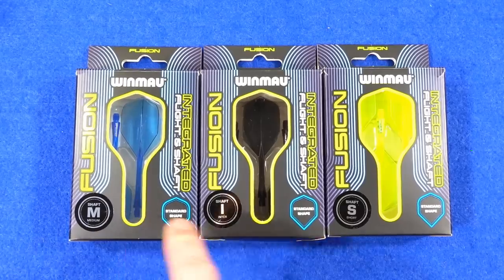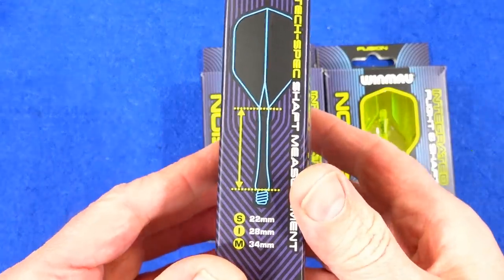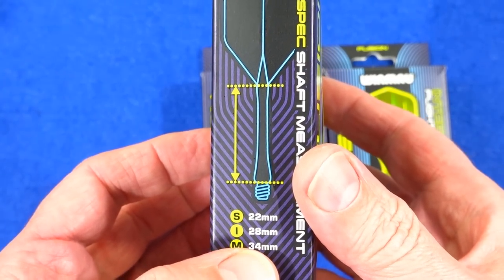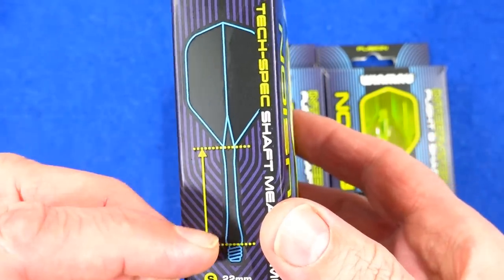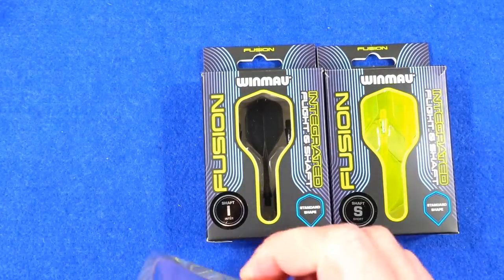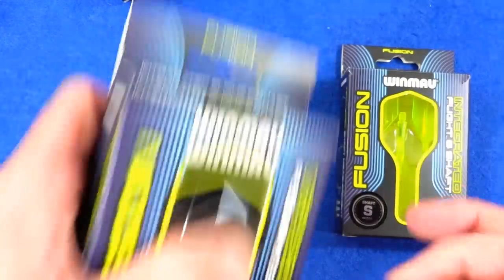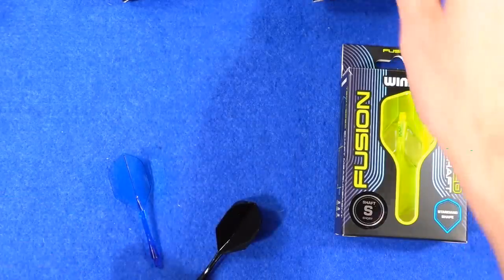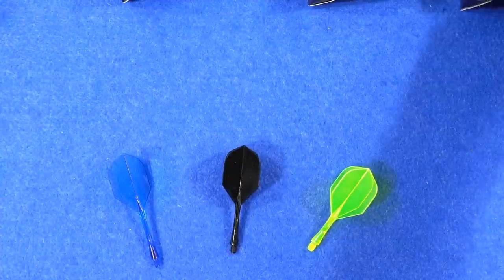I've got the medium, intermediate, and short. What I like about the packaging is on the side, it's got the lengths of the stems for each. So medium 34, intermediate 28, and short 22. It even shows you the part that's been measured. I've got the azul or azure blue, I've got the black, and the fluorescent yellow.